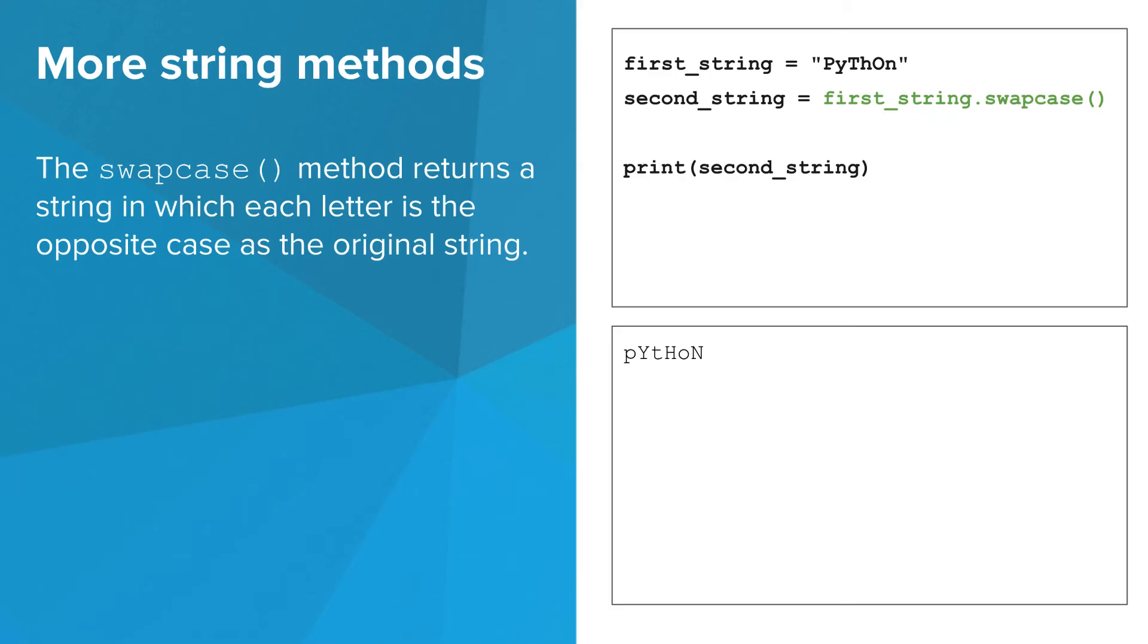Next you have the swapcase method, which just returns a string in which each letter is the opposite case as the corresponding letter in the original string.